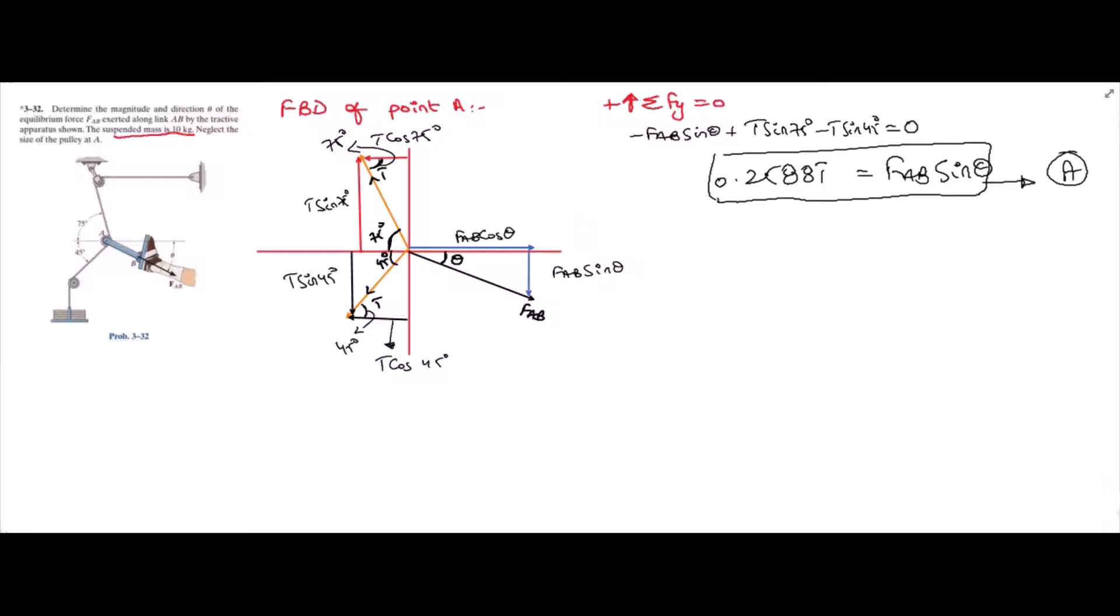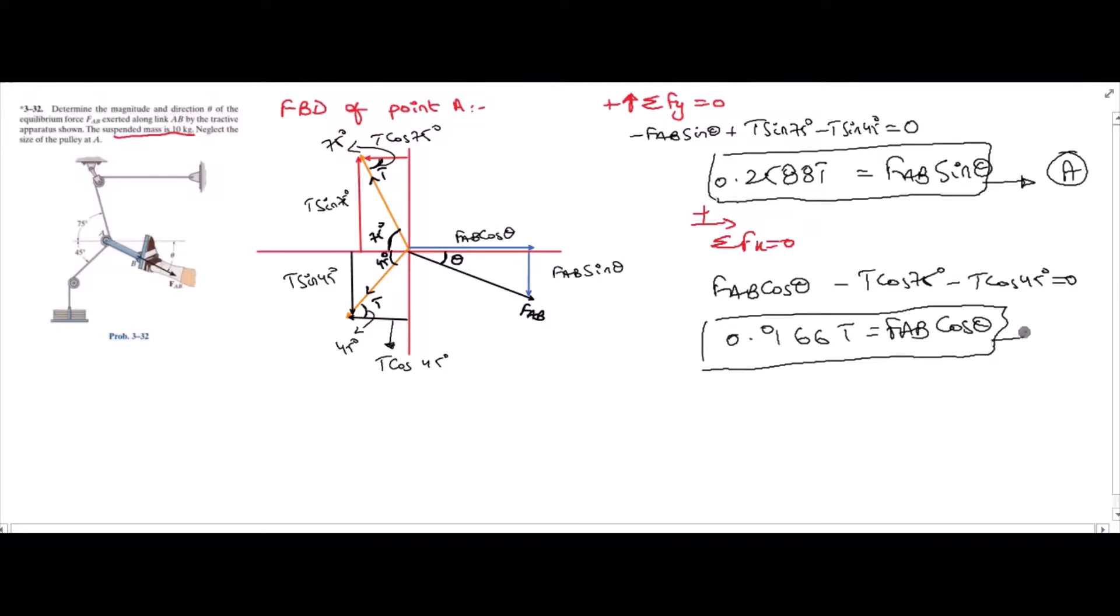For the second equation, I have sum of the forces in the x-direction as zero. I am taking right-hand side as positive. From here, I have positive FAB cos theta minus T cos 75 degrees minus T cos 45 degrees equals to zero. Upon solving this, we have 0.966 times T equals FAB cos theta. This is our equation B.